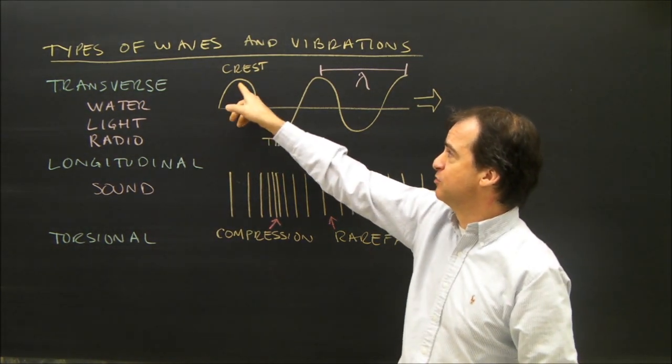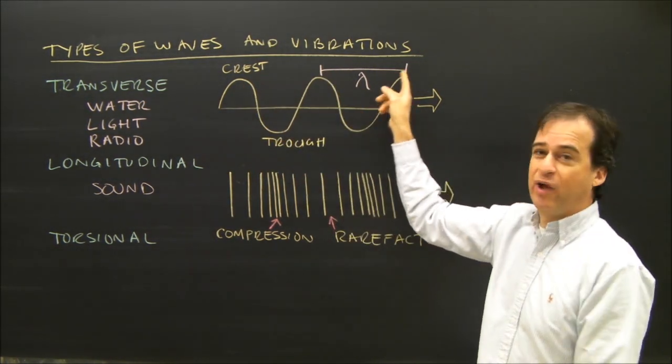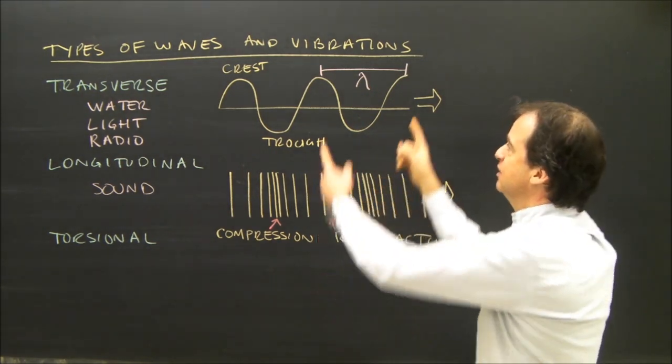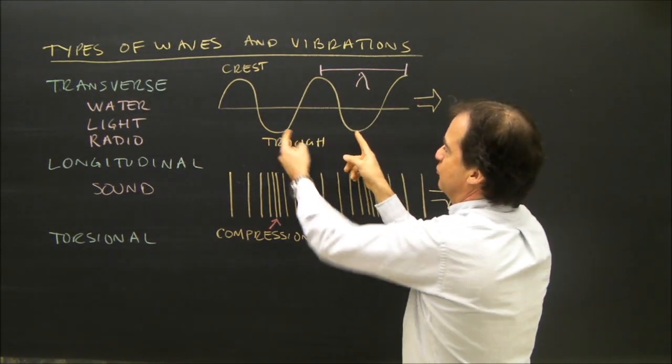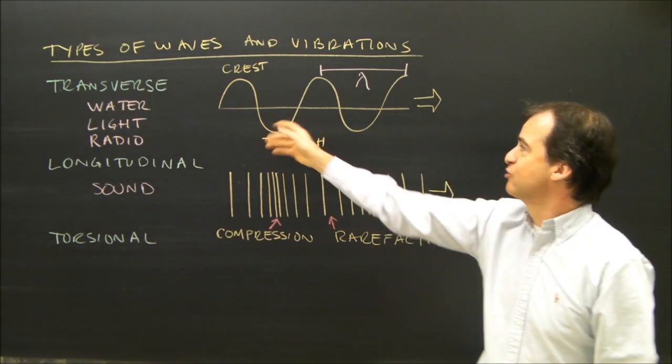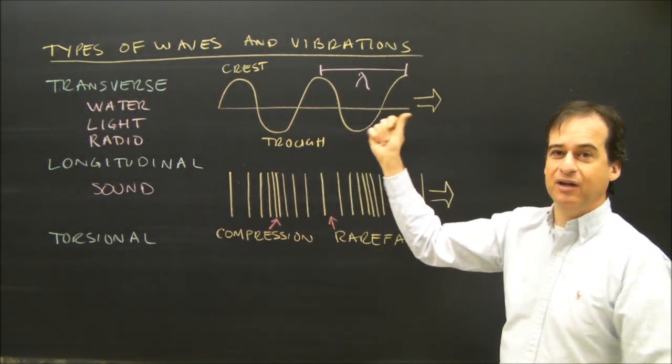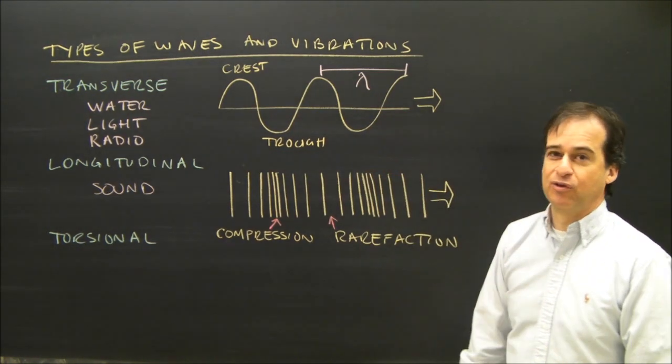But what you need to know for this is we've got a crest, a trough, we've got wavelength, that's how long the wave is, and I can measure that from the top of one crest to the top of a crest, from the bottom of a trough to the bottom of a trough. Transverse waves can travel this way. Imagine it like a water wave moving through the water.